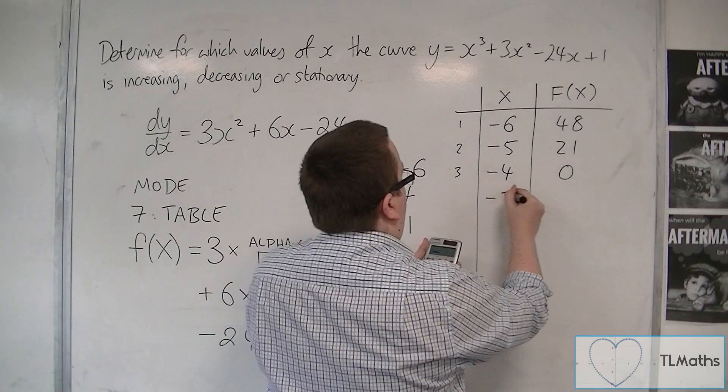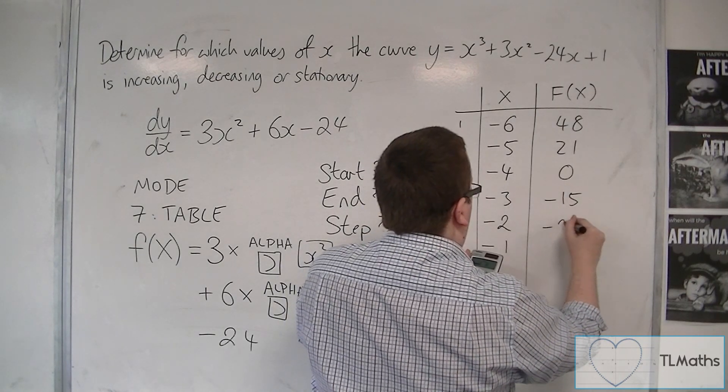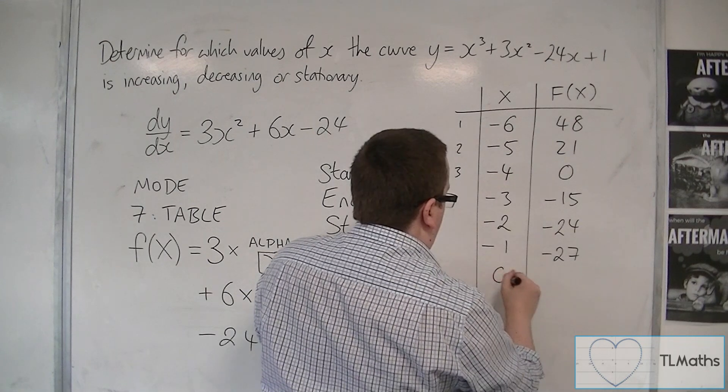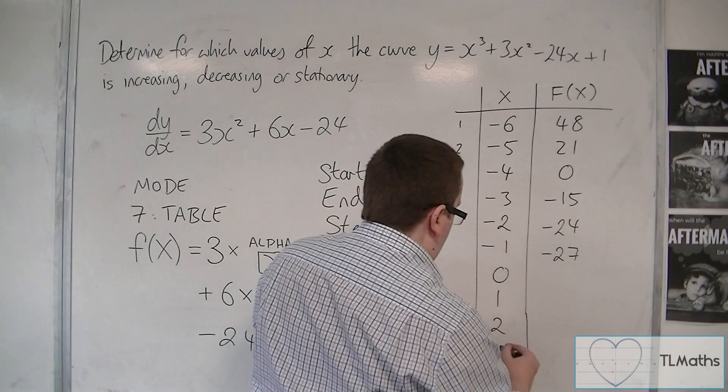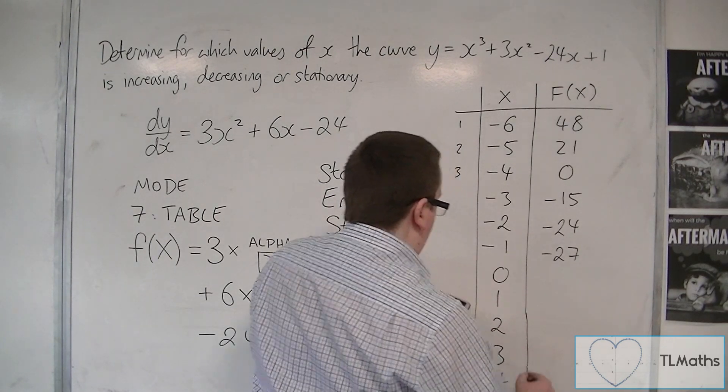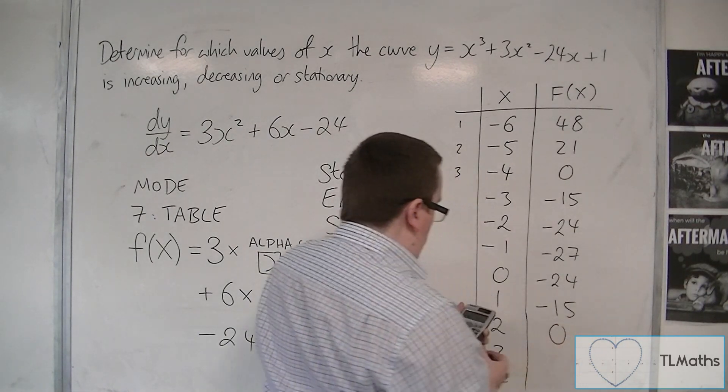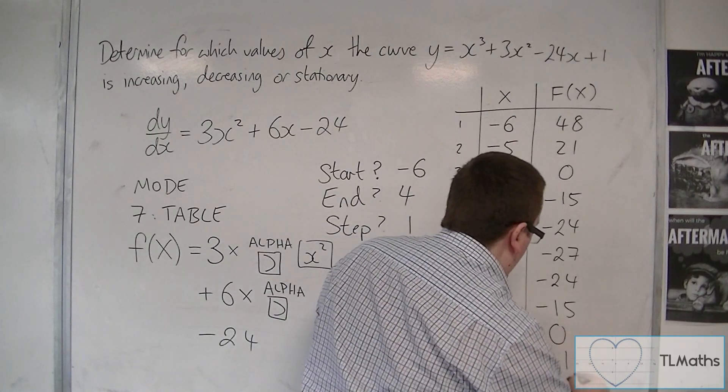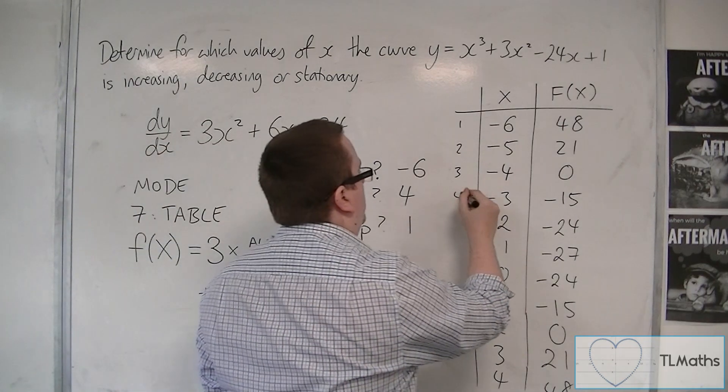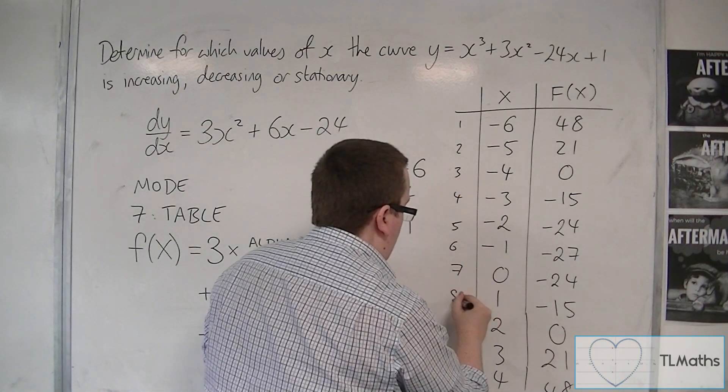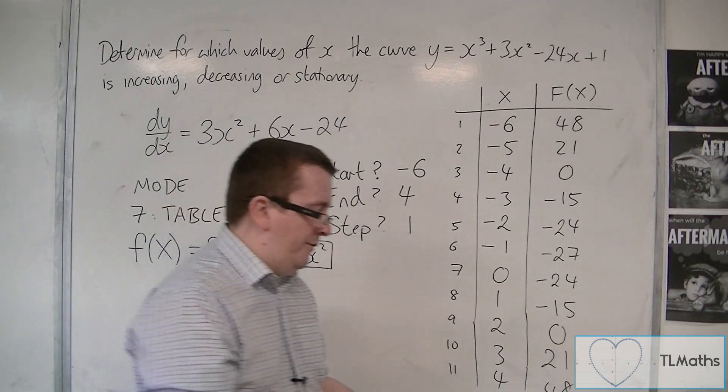So I can see that there's minus 3, minus 2, minus 1. That's minus 15, minus 24, that's minus 27. Then I've got 0, 1, and 2. I'm going to have 3 and 4 as well. We've got minus 24, we've got minus 15, we've got 0. And then keep going, we've got 21 and 48. So it's given me this big table of results. And really all I want to do is look at that final column, the f(x) column.